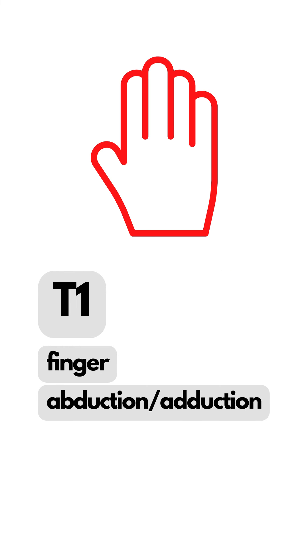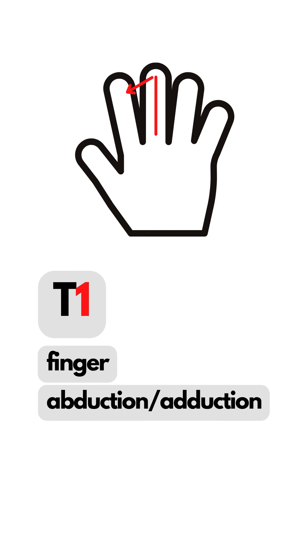Lastly, we have T1: finger abduction and adduction. The middle finger is 1, and the tail of number 1 is the arrow, which tells us that the index and other fingers move away from or towards the middle.